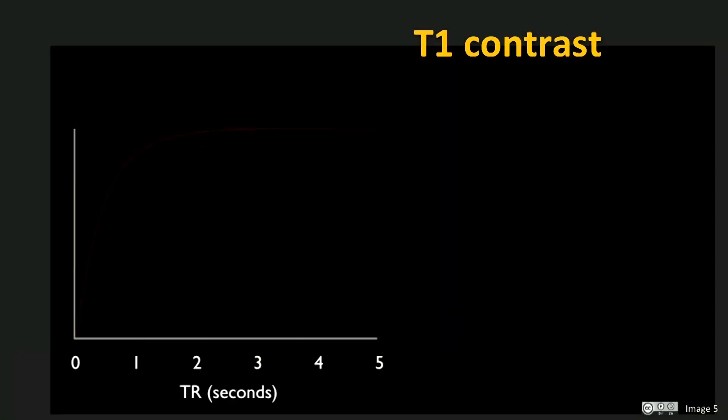We now look at the effect of T1 relaxation on water signal as a function of the TR time. Here we consider the amount of longitudinal magnetization that has recovered along the Z axis after a period of TR following a 90 degree pulse, for tissues with a short, medium and long T1 relaxation time, ranging from 400 milliseconds to 2 seconds.